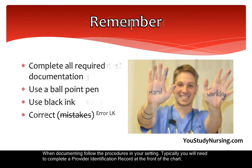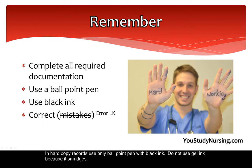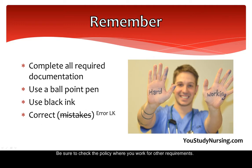When documenting, follow the procedures in your setting. Typically, you will need to complete a provider identification record at the front of the chart. In hard copy records, use only a ballpoint pen with black ink. Do not use gel ink because it smudges. To correct an error, simply draw a line through the mistake, write error, then initial. Be sure to check the policy where you work for other requirements.